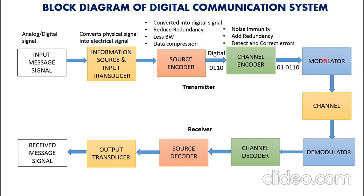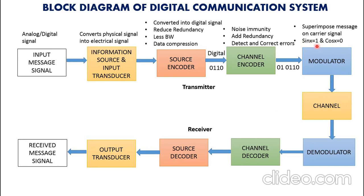Now the modulator. The modulator is used such that the carrier signal is superimposed with the message signal. The carrier is a high power signal and the message is a low power signal. If I have to send a message, it will not go up to a long distance. If I have to send a message to a longer distance, I will use some high power signal on which the message will be superimposed and it will go to a longer distance. This process is happening here. For example, if we represent 1 by sin(x) and 0 by cos(x), then we will transmit sin(x) for 1 and cos(x) for 0.